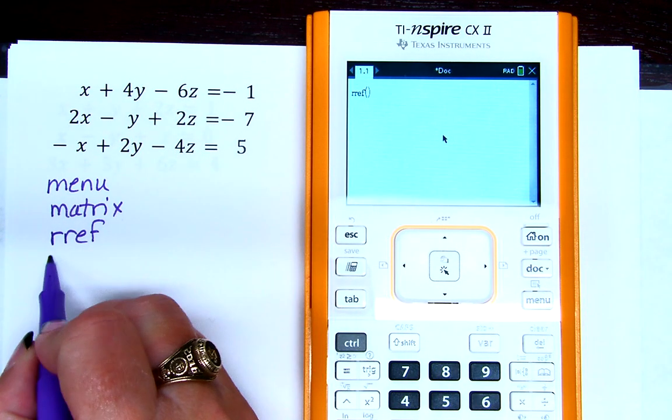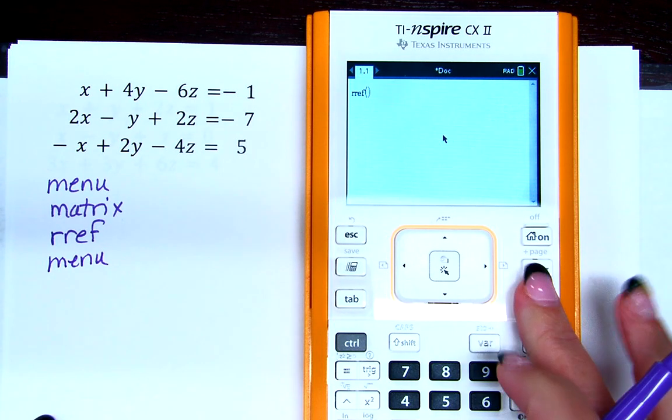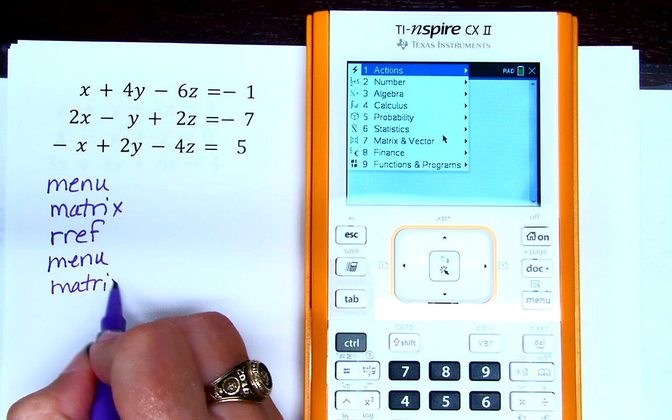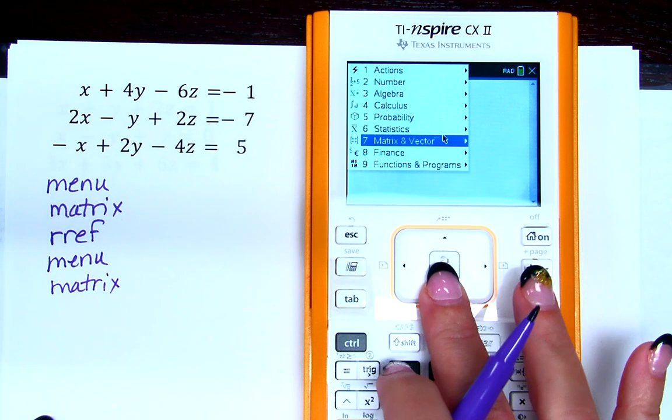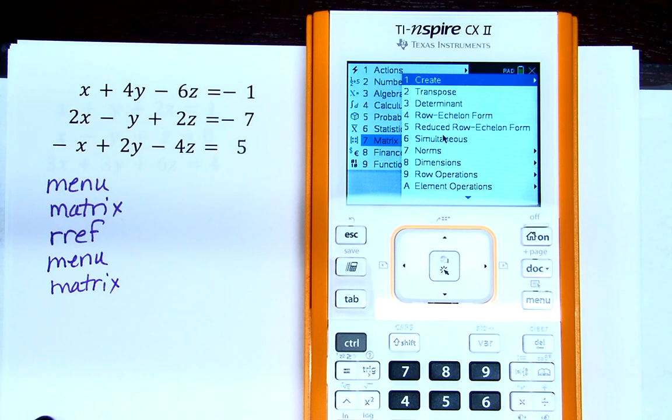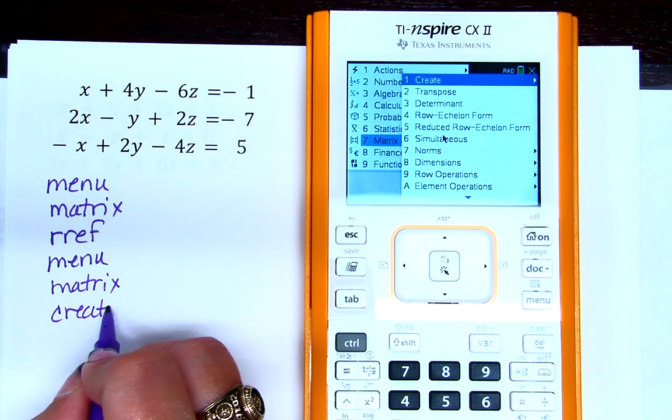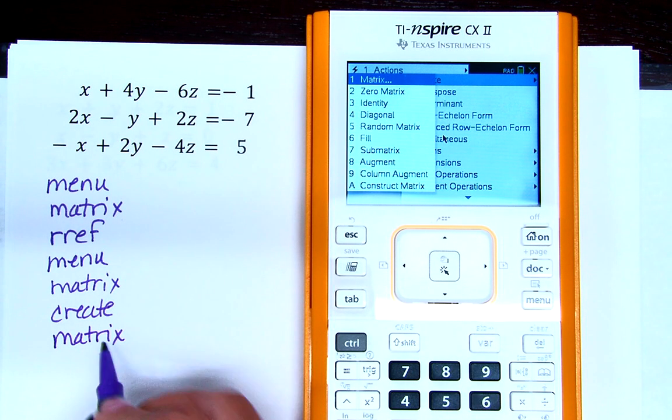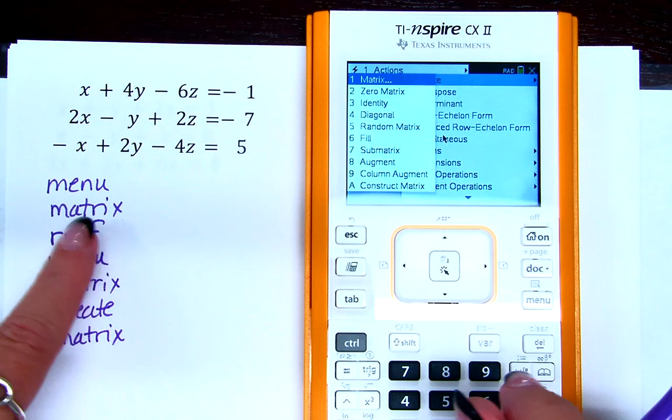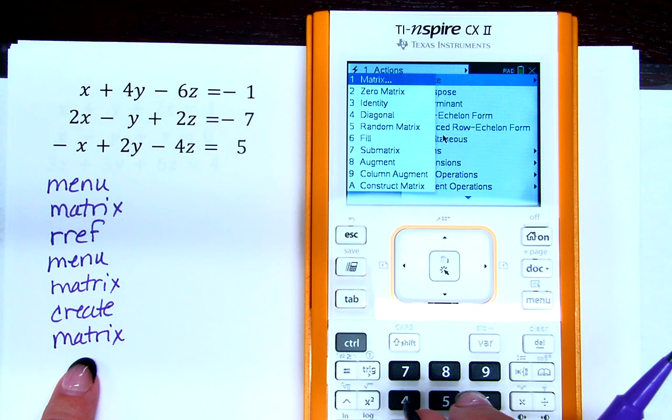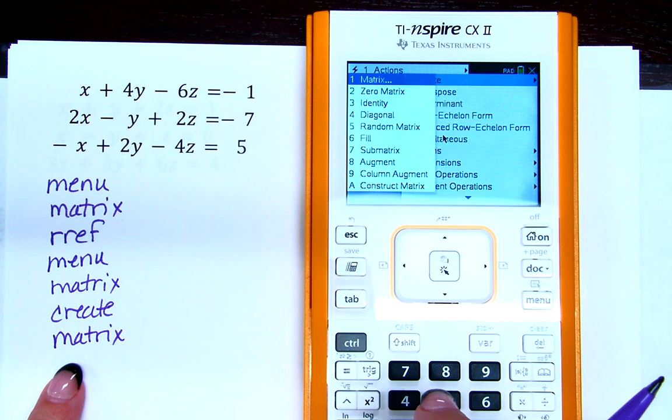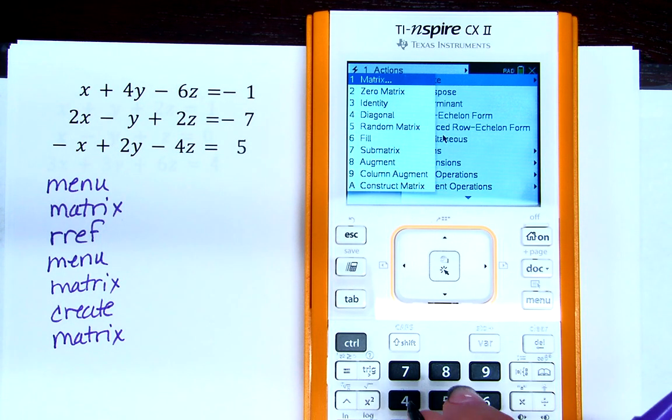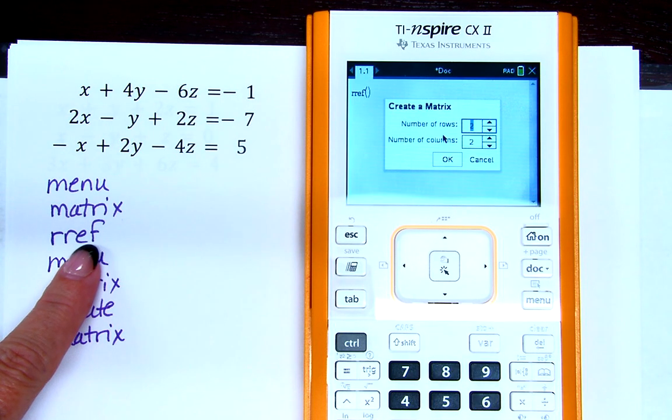Now we're going to go back to menu and back to matrix. And this time we're going to create a matrix. Now, can you tell me why I'm not telling you numbers to push? Why am I writing words instead of the numbers that we push? So you remember the actions that we're doing. I don't want you to just be a person that's just a good button pusher. I want you to know what math we're doing.